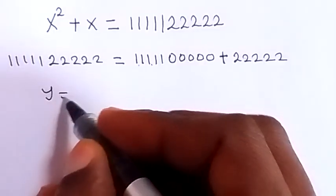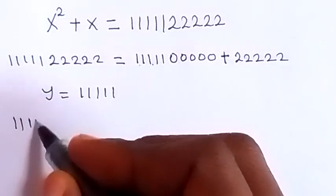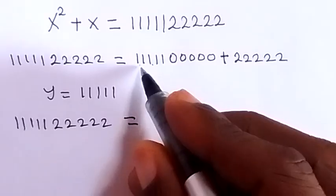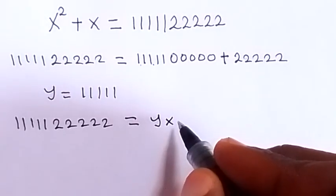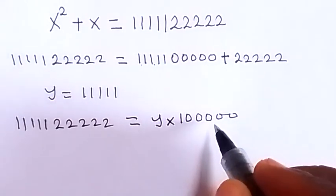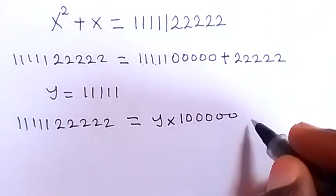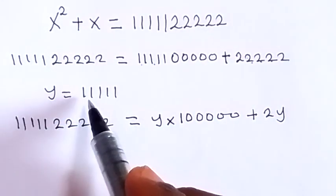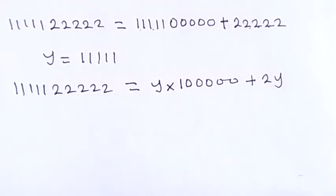Let y be equal to 11111. So 11111 becomes y. Then 22222 becomes 2y, because y times 100000 gives us the positional form, and 22222 is simply two times y.